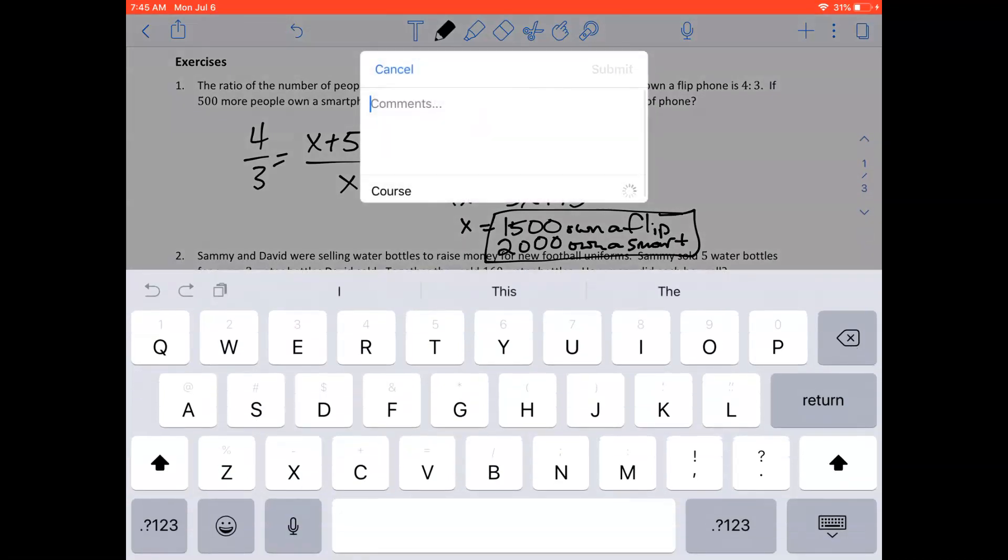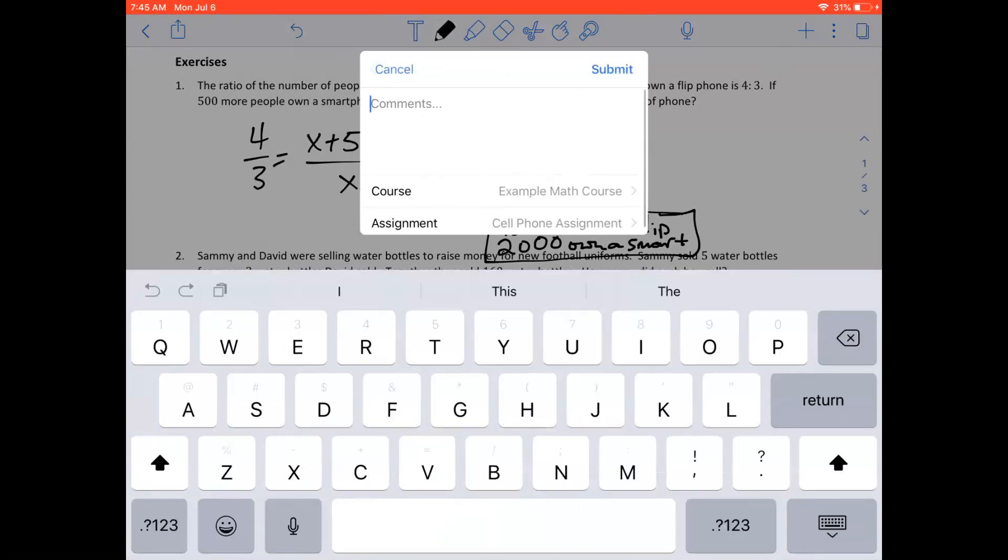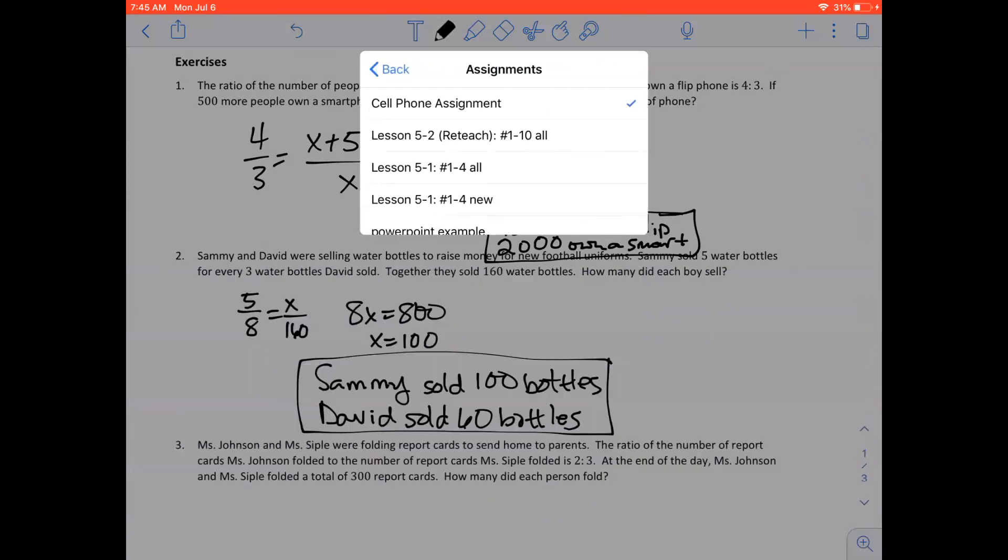Another little window appears. I can make a comment to my teacher if I need to, letting him or her know something about my assignment. Then I want to select the correct course. So this is for my math course and the assignment to which I want to turn this in.